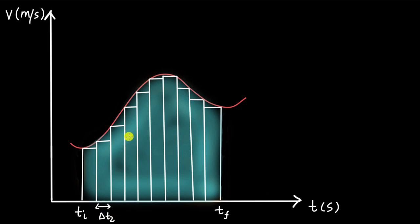What we can do is sum up the areas of these rectangles. We know how to calculate the area of a rectangle, and we have 10 rectangles here. So let's find the sum of the areas of these 10 rectangles — that will give us some approximation for the blue shaded area.